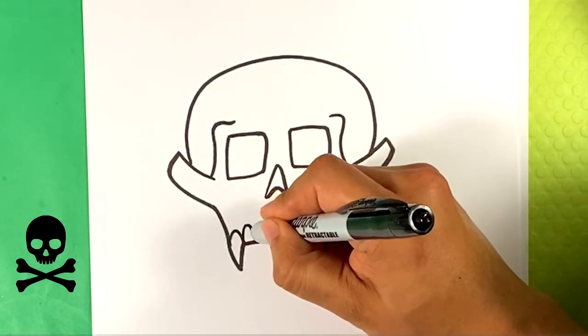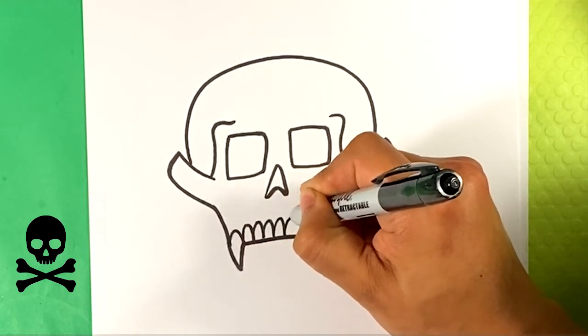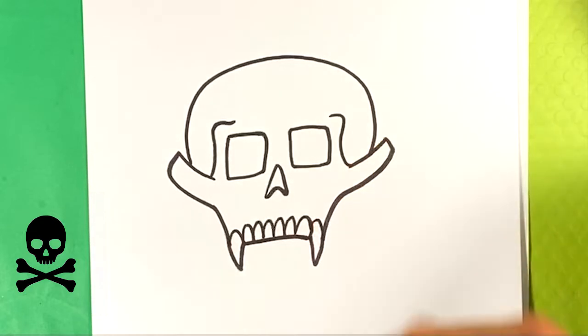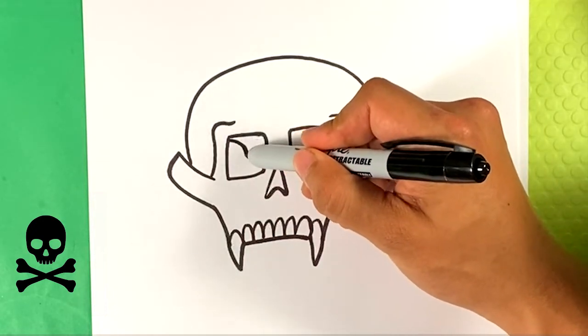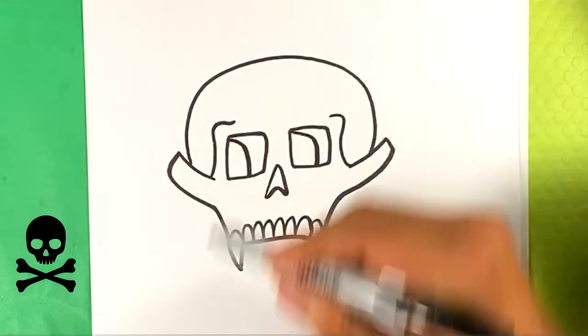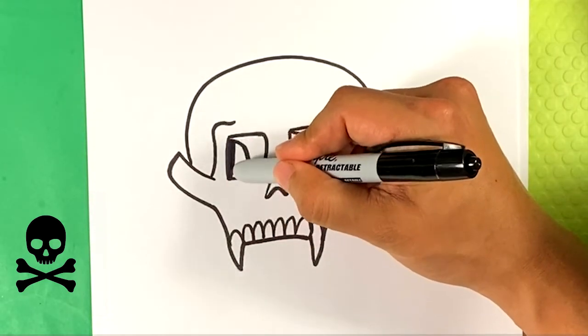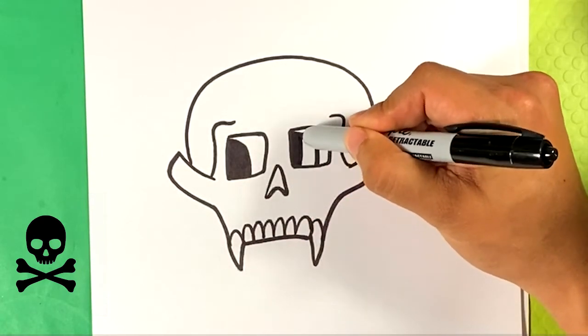Curve over here. Curve over here on this side. And we're gonna draw them line all the way across. Now what we're gonna do is I'm gonna give it a little bit of a dimension to it. I'm gonna draw like a curve line like so. And I'm gonna fill this part in because it's gonna be a dark area there in the middle.